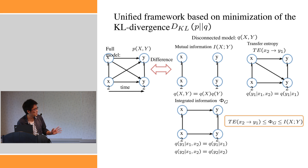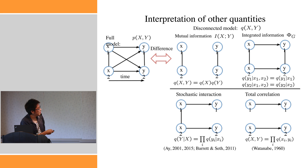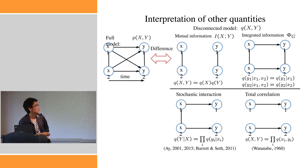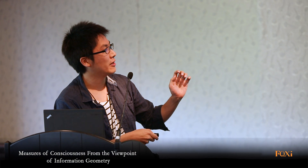Transfer entropy is less than phi, and mutual information is the upper bound. We can also compare these quantities with previously proposed measures. One previously proposed measure of integrated information turns out to also quantify simultaneous non-causal interactions between Y1 and Y2. Therefore, if we want to purely quantify causal inferences, the new measure is better.